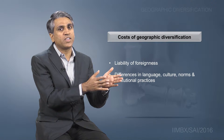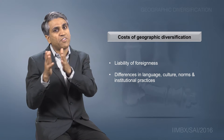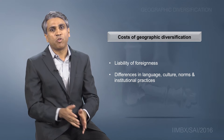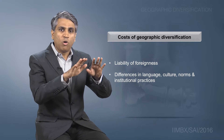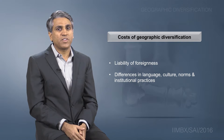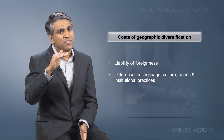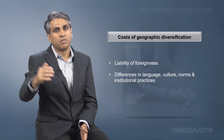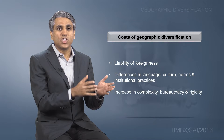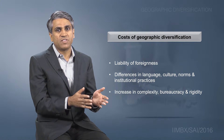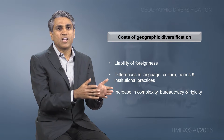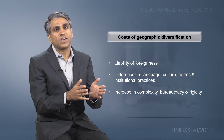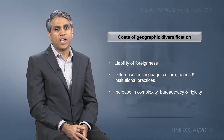For example, an American firm may find it difficult to understand how the caste system in India works. The American norms of hire and fire are different from the Japanese norms of lifetime employment. Because of all these differences, firms face significant additional costs when they cross national borders. In addition, the costs of excessive diversification that we already discussed apply in the case of geographic diversification as well.